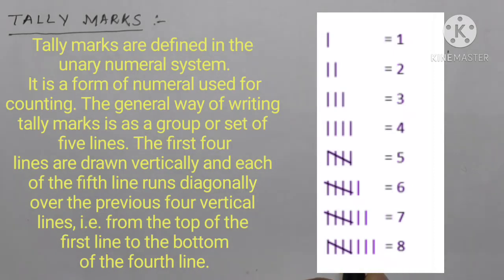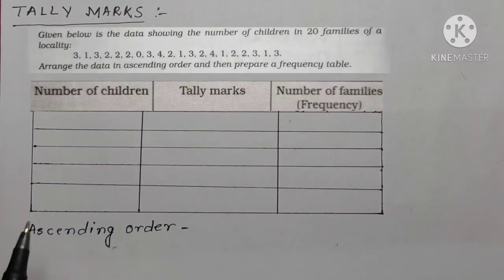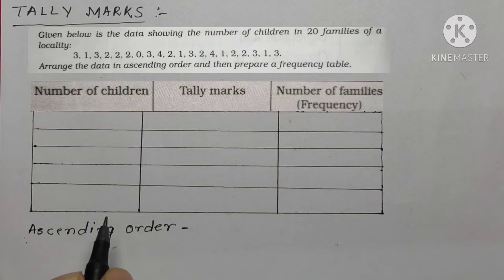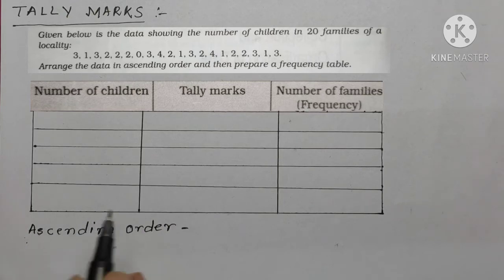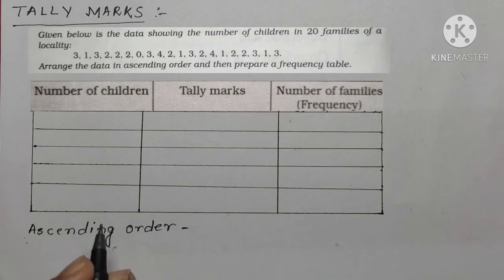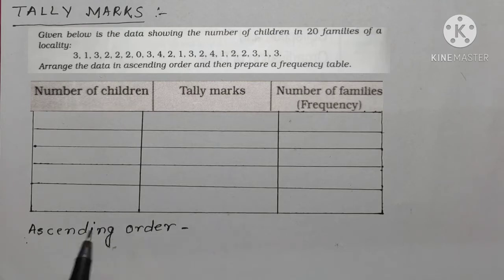As you can see on the screen, this shows how numbers are represented by tally marks. Now let's solve an example: the data shows the number of children in 20 families of the locality. The question asks us to arrange the data in ascending order and then prepare a frequency table.